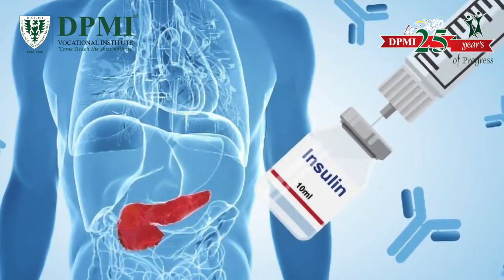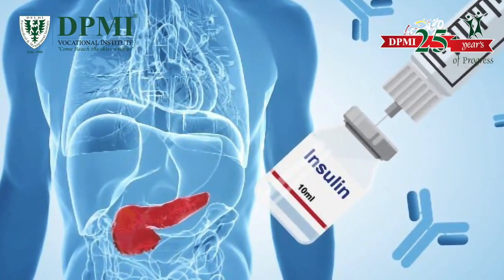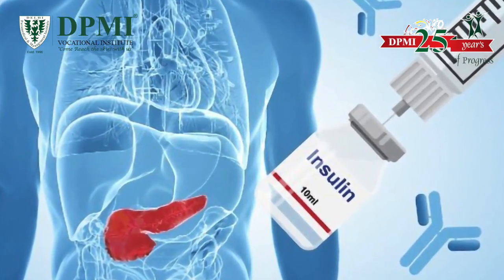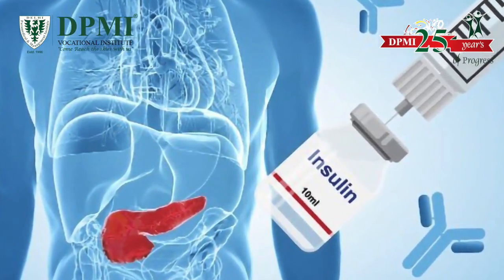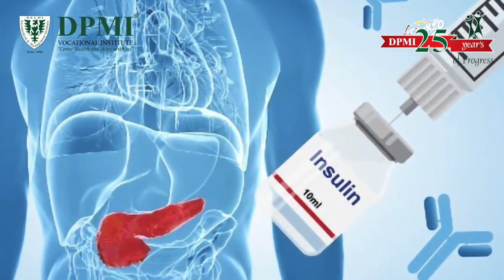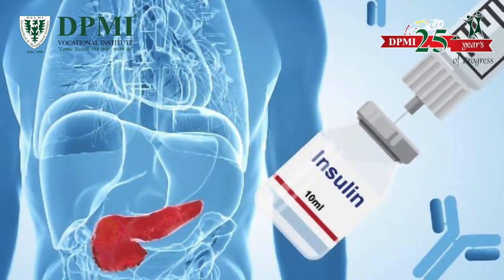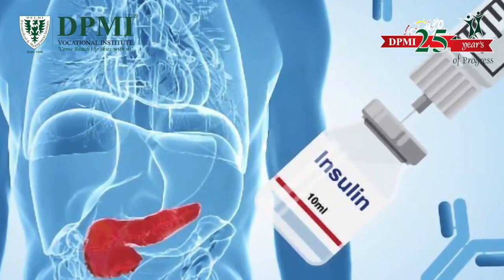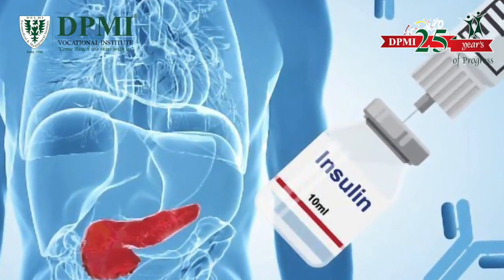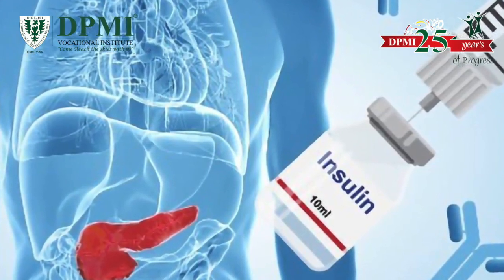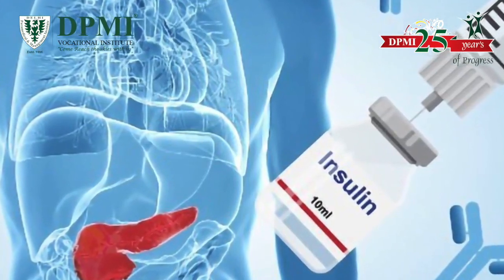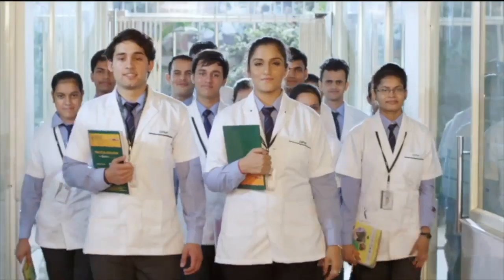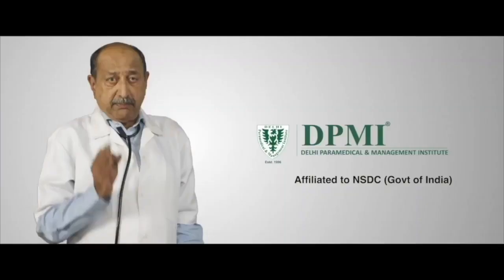Decreased levels of glucose can be due to insulin administration, as a result of insulinoma, inborn errors of carbohydrate metabolism, or fasting.